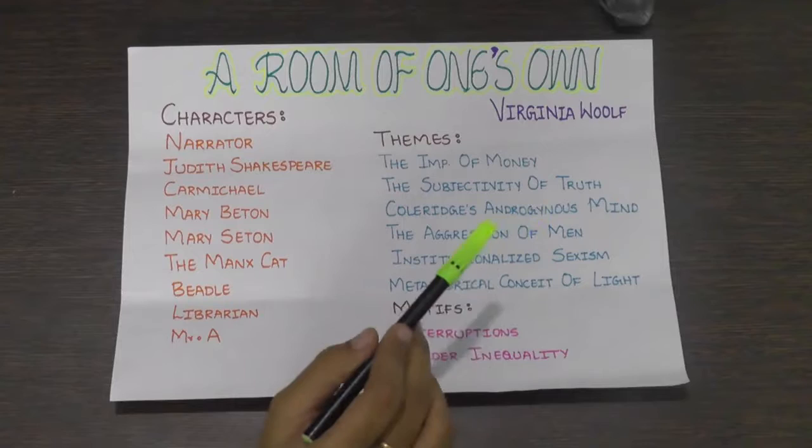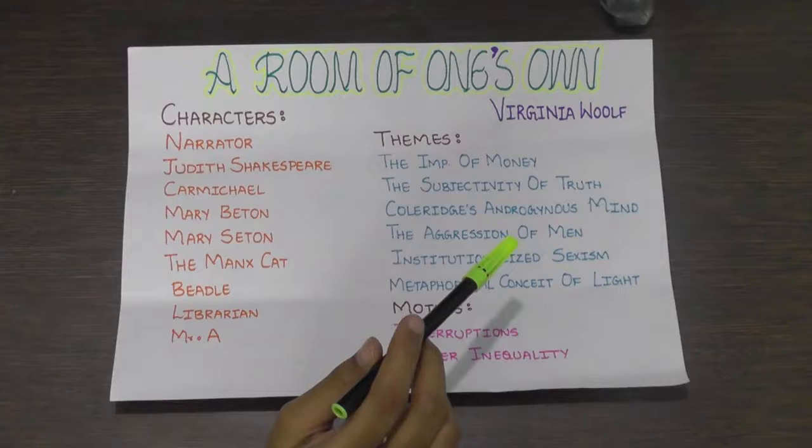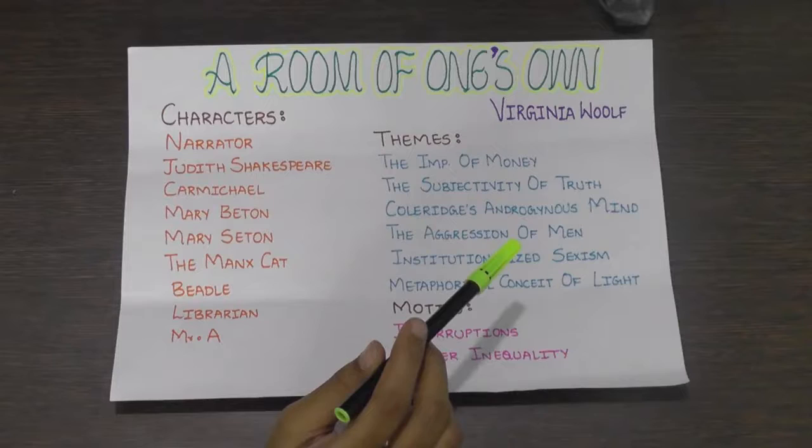Institutionalized Sexism: Woolf states that only men were allowed to keep their earned money, and this helped them channel financial resources back into the universities and institutions that helped them gain power in the first place. In contrast, the women's university the narrator visits had to scrape together the necessary funds with great difficulty.